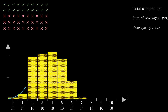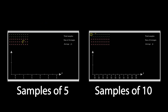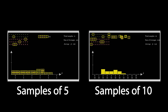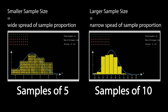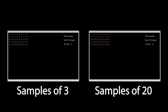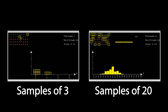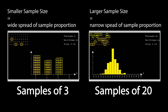After seeing these two simulations, we can make an observation about the shape of the distributions. Notice it's in the shape of a normal distribution. The larger the sample size, the closer the distribution of sample proportions will match the shape of a normal distribution. To make it super obvious, I'll play side by side: samples of 3 and samples of 20. The larger the sample size, the closer the distribution will match a normal distribution.